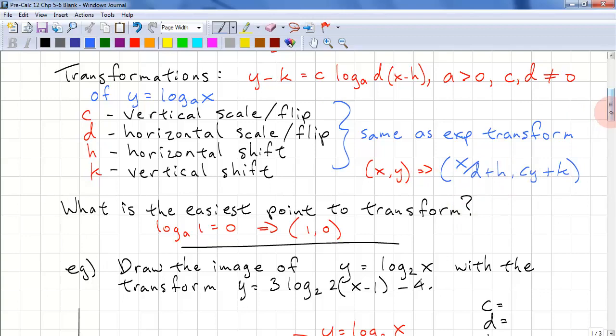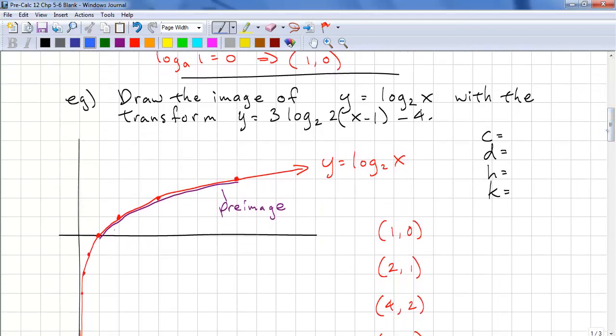Let's look at an example. Draw the image of y equals log_2(x) with the transform y equals 3 log_2(2(x minus 1)) minus 4. So we have 3, that's a stretch. We have 2, that's a compress. H is 1, that's to the right. And k is negative 4, that's down.